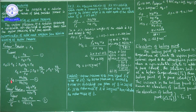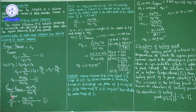So the relative lowering of vapor pressure ΔP / P⁰_A = W_B × M_A / (W_A × M_B), where W_B is the weight of solute, M_A is the molar mass of solvent, W_A is the weight of solvent, and M_B is the molar mass of solute. By using this expression, we calculate the molar mass of the solute M_B using relative lowering of vapor pressure.